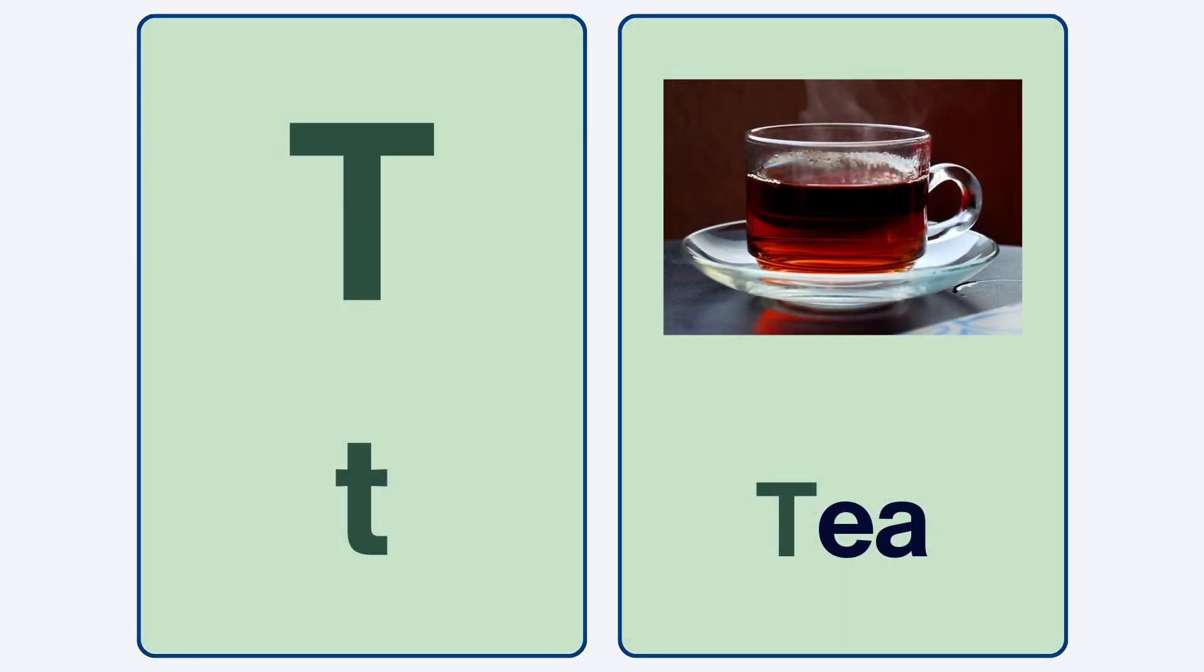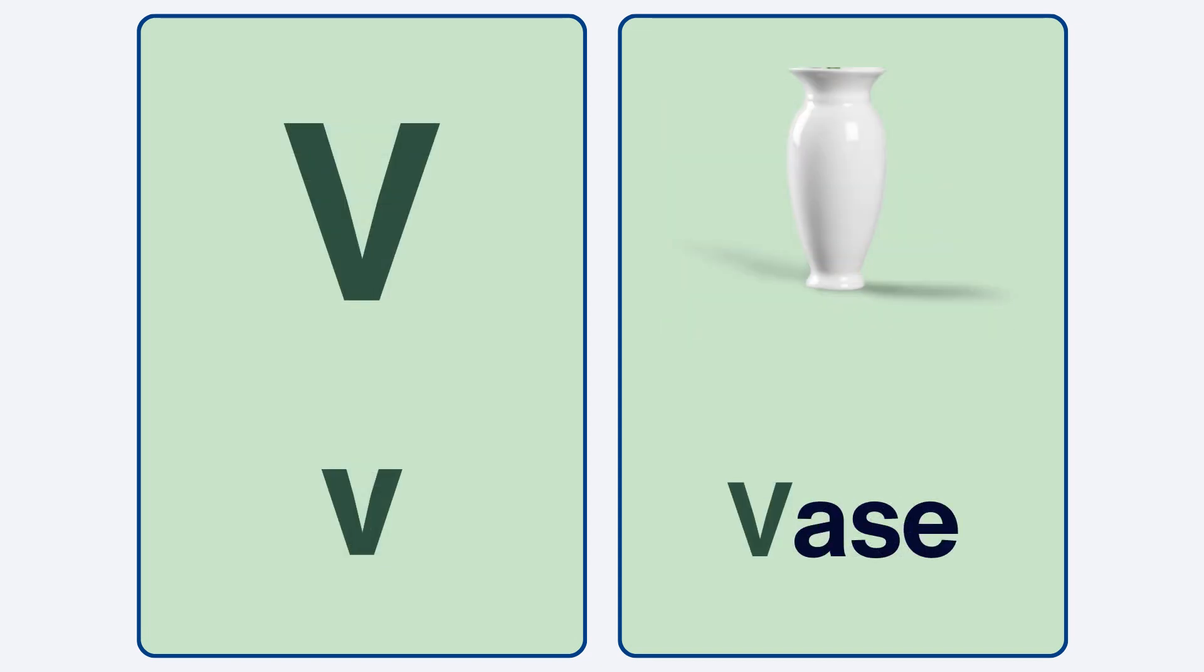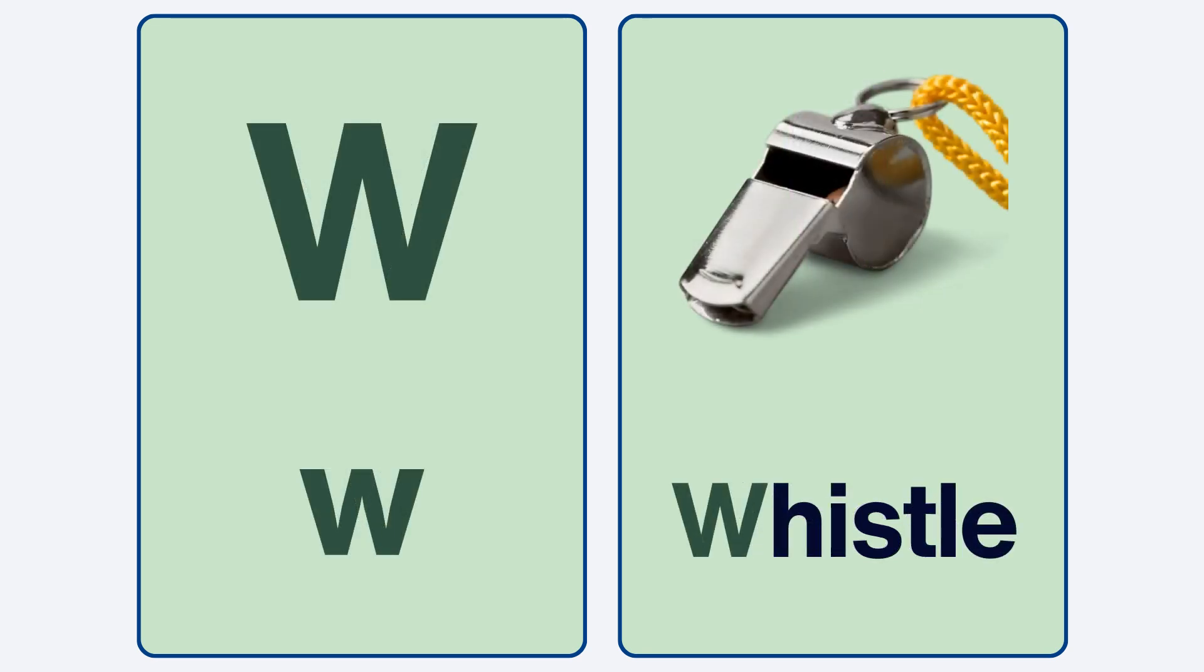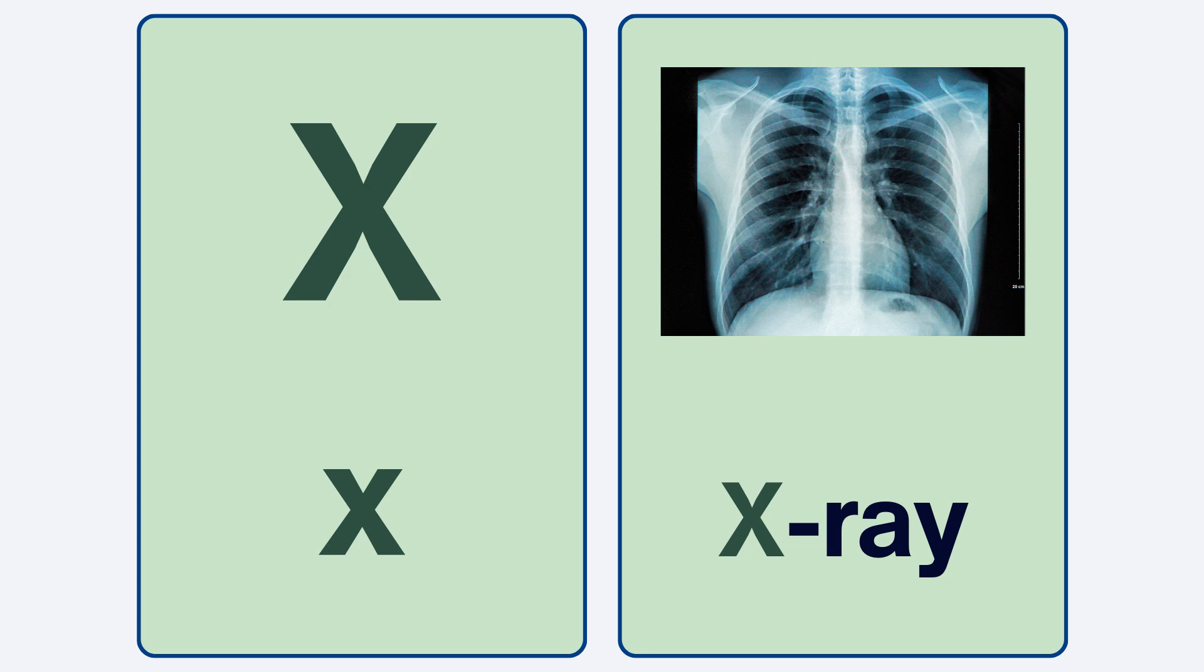Let's continue with S. The next letter is T. Moving on, we have V. Now it's time for W.